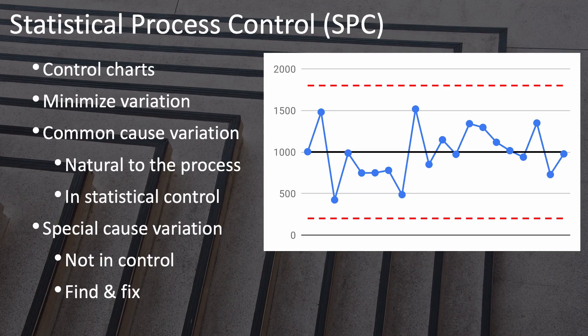The goal with statistical process control is to minimize variation. Some amount of variation is natural to the process, and statistical methods are used to determine this range of acceptable natural variation. If a process stays within these bounds, it's considered to be in statistical control. If not, the process is considered out of statistical control, and the specific causes of these unacceptable variations — called special cause variations — should be identified and eliminated. Once special cause variations are eliminated, you can focus on improving the process itself to systematically reduce natural common cause variation.